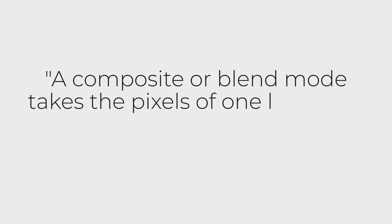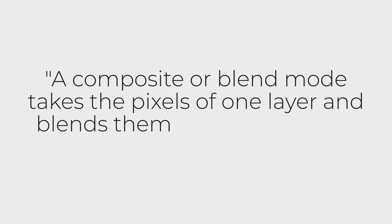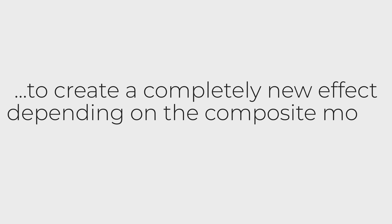First of all, we need to clarify the term composite or blend mode. A composite or blend mode takes the pixels of one layer and blends them with the pixels of another layer to create a completely new effect depending on the composite mode chosen. Blend or composite modes allow you to do so much more than just adjusting the opacity — they allow you to blend layers based on their luminance value, hue, and/or saturation.